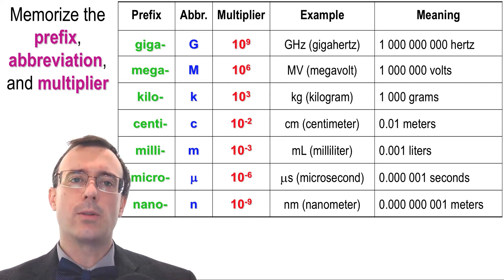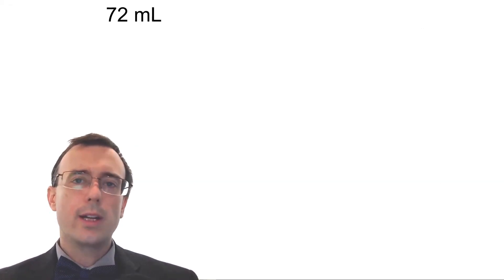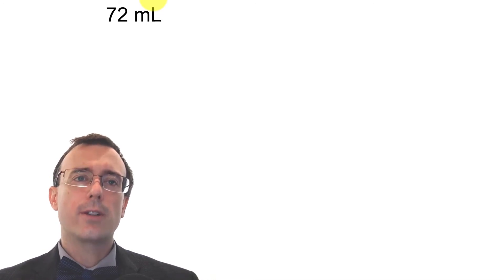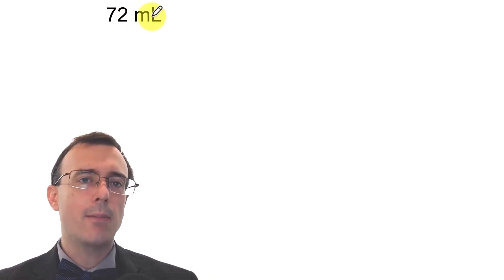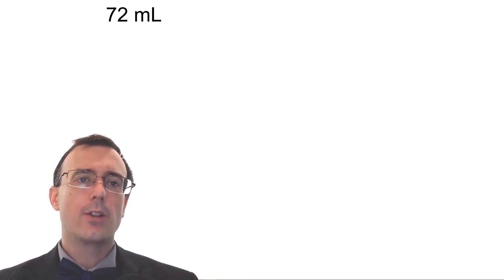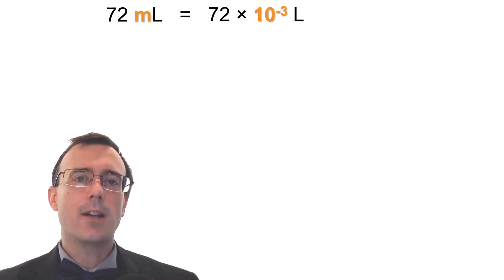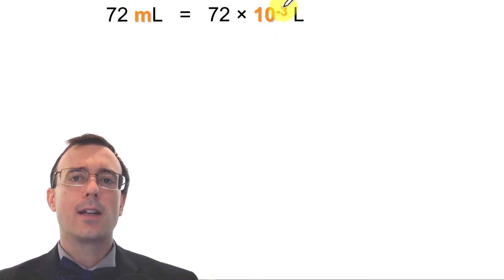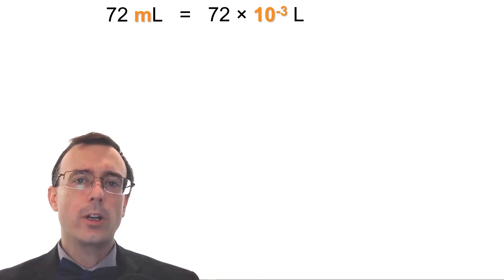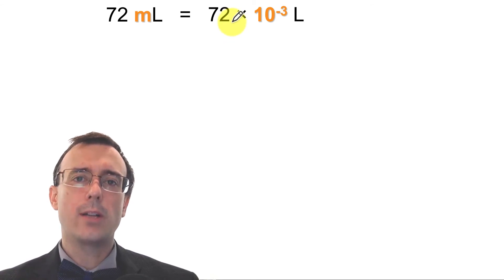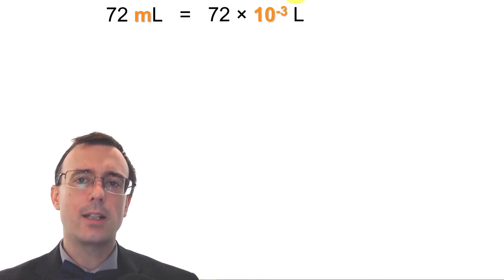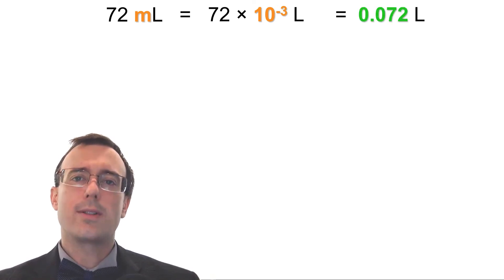Let's go through some examples. 72 milliliters — what does that mean? The lowercase m means milli, which means times 10 to the negative 3. So this is 72 times 10 to the minus 3 liters. To convert to regular notation, move the decimal point three spots to the left — giving 0.072 liters.